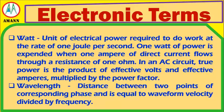Watt: A unit of electrical power required to do work at the rate of one joule per second. One watt of power is expended when one ampere of direct current flows through a resistance of one ohm. In an AC circuit, true power is the product of effective volts and effective amperes multiplied by the power factor. Wavelength: The distance between two points of corresponding phase, equal to wave velocity divided by frequency.